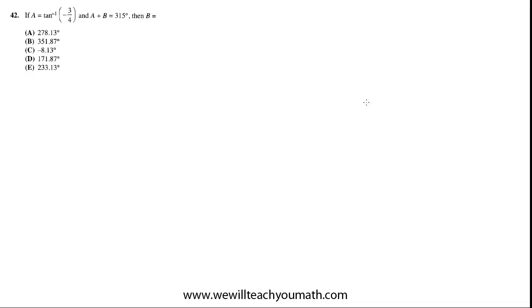Problem 42: If A equals tan inverse of negative 3 fourths and A plus B equals 315, then B equals what?